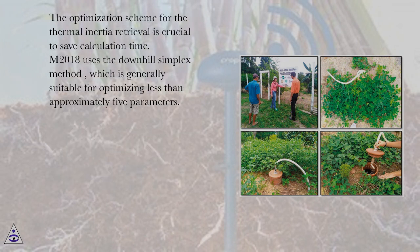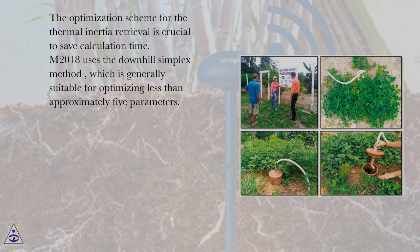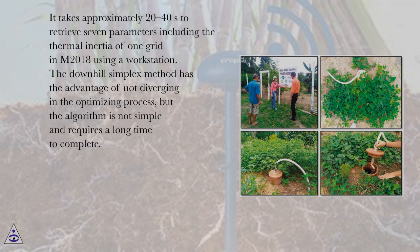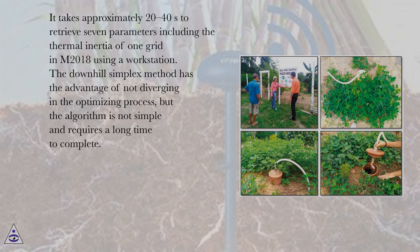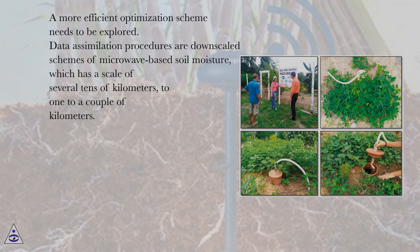The optimization scheme for the thermal inertia retrieval is crucial to save calculation time. M2018 uses the downhill simplex method, which is generally suitable for optimizing less than approximately five parameters. It takes approximately 20 to 40 seconds to retrieve seven parameters including the thermal inertia of one grid in M2018 using a workstation. The downhill simplex method has the advantage of not diverging in the optimizing process, but the algorithm is not simple and requires a long time to complete. A more efficient optimization scheme needs to be explored.